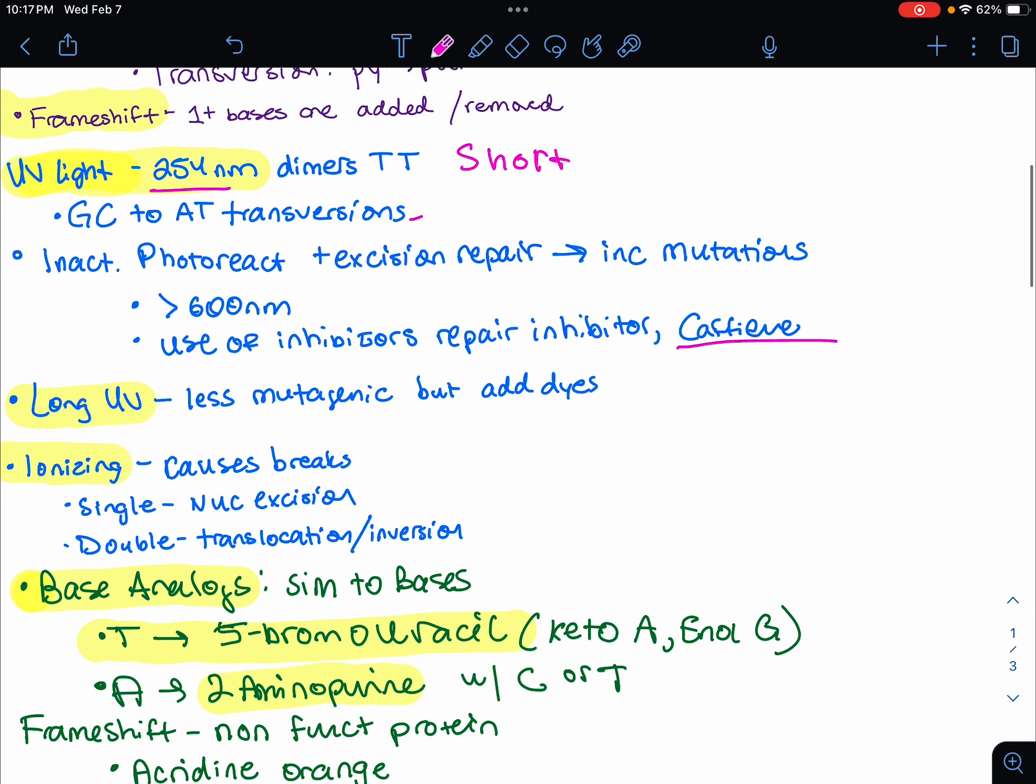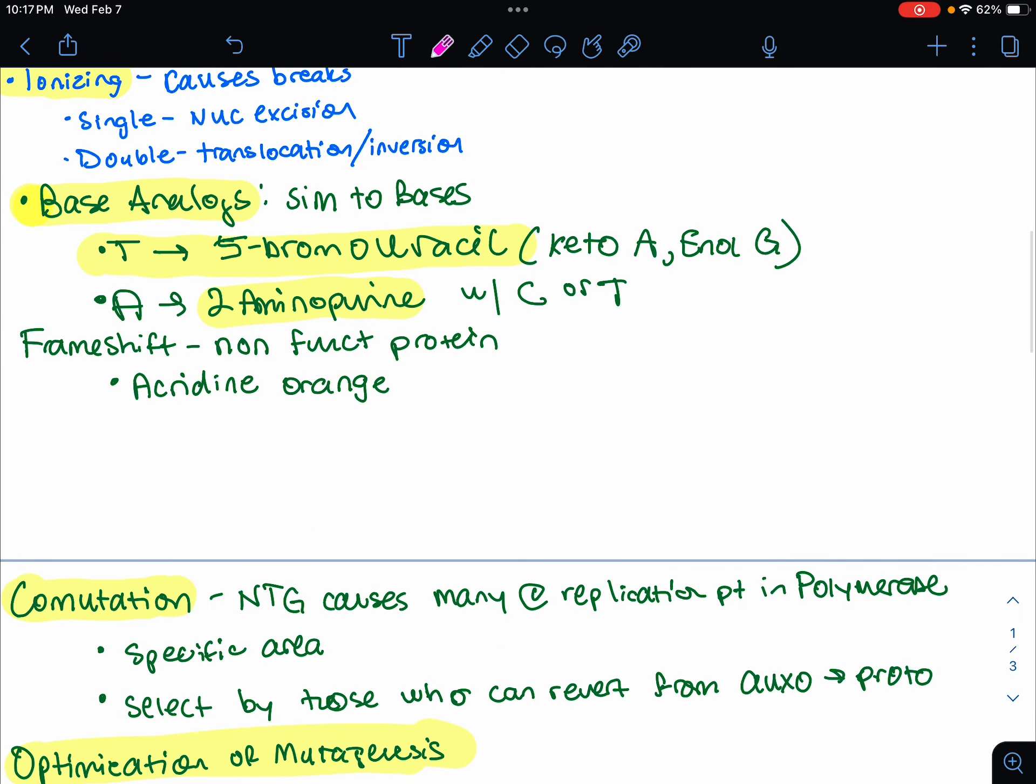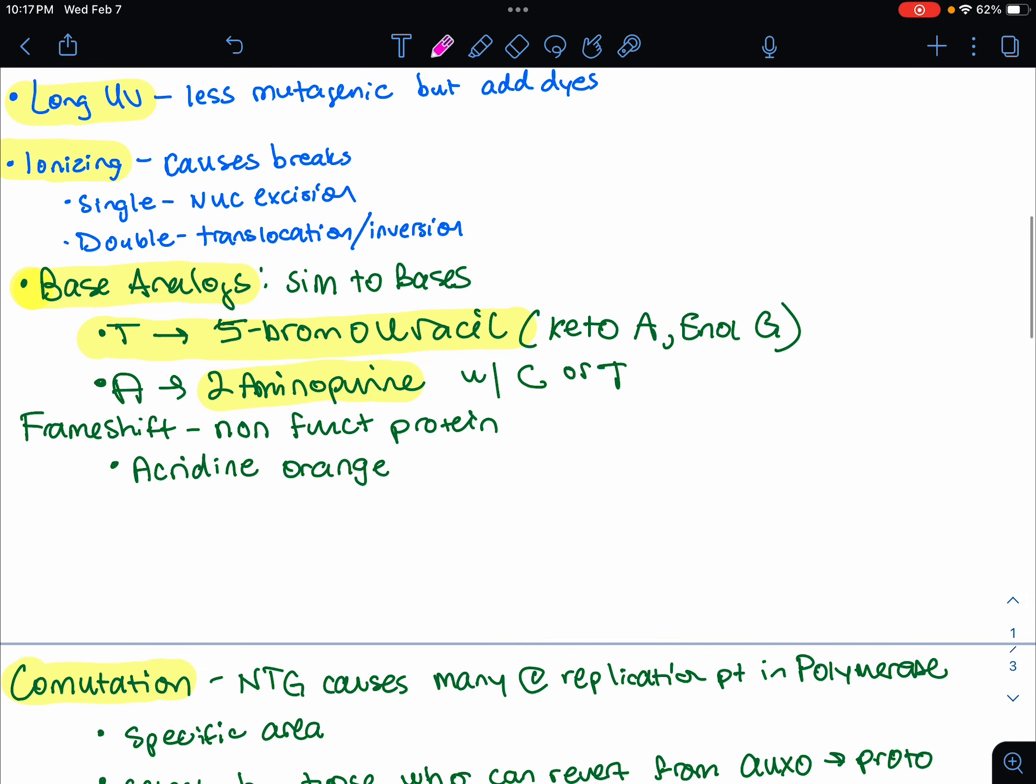This has the manipulations in long wavelength visible light at 600 nanometers that will increase the frequency of mutation. Or we could also use inhibitors of repair, such as caffeine. Caffeine actually seems to increase the frequency of mutation because it inhibits those repair mechanisms. We also have the ionizing radiation. This is going to be like x-rays, gamma rays, or beta rays.